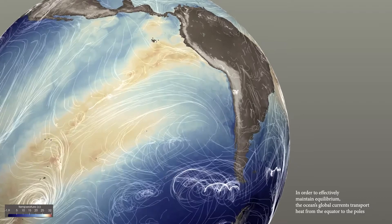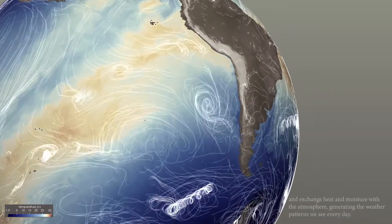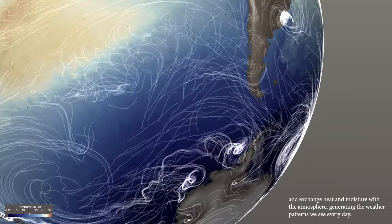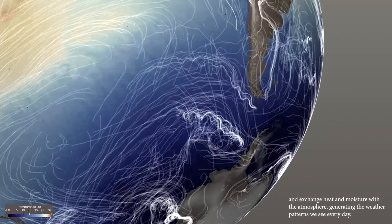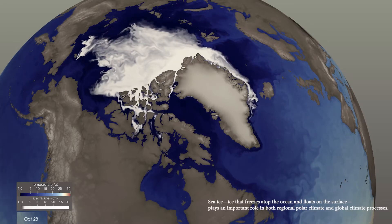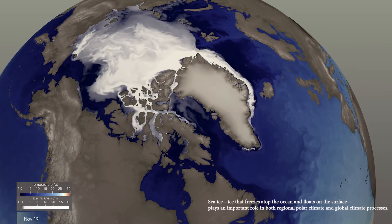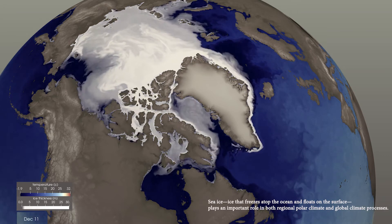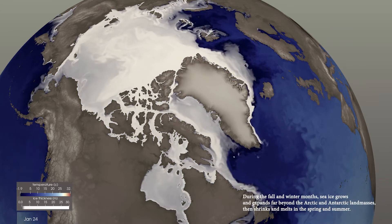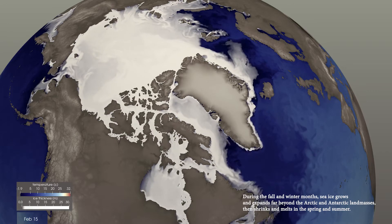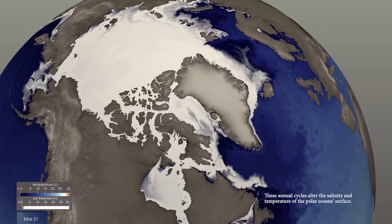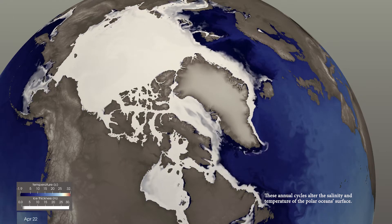The ocean's global currents generate the weather patterns we see every day. Sea ice — ice that freezes atop the ocean and floats on the surface — plays an important role in both regional polar climate and global climate processes. During the fall and winter months, sea ice grows and expands, then shrinks and melts in the spring and summer. These annual cycles alter the salinity and temperature of the polar ocean's surface.